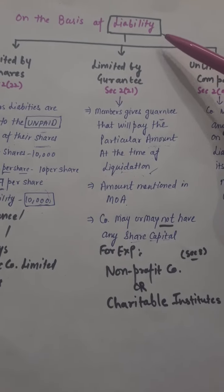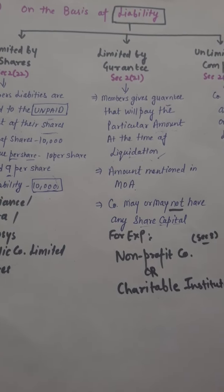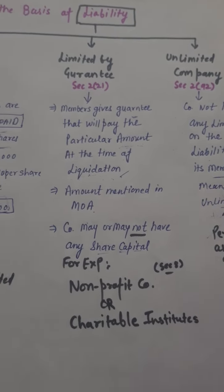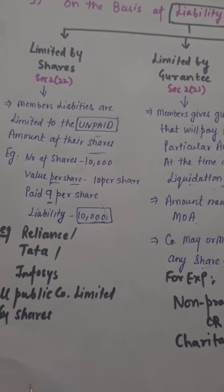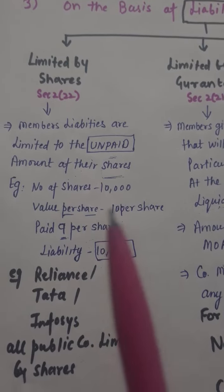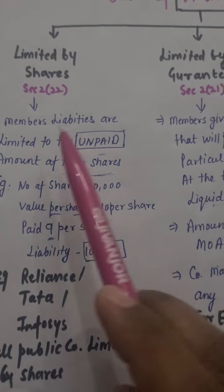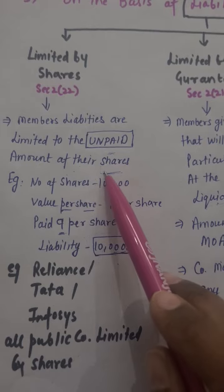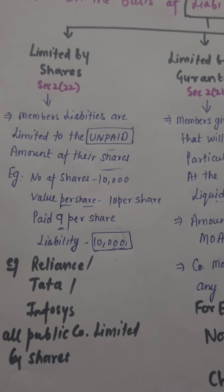Next, on the basis of liability. On the basis of liability, companies are divided into three parts: limited by shares, limited by guarantee, and unlimited company. First, limited by shares, which is defined under Section 2(22). Members' liabilities are limited to the unpaid amount of their shares.